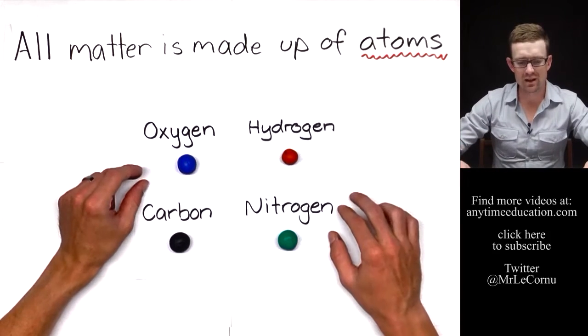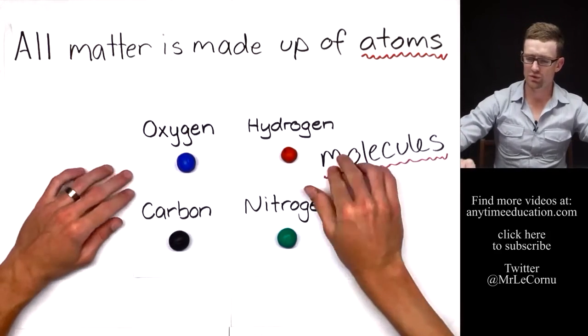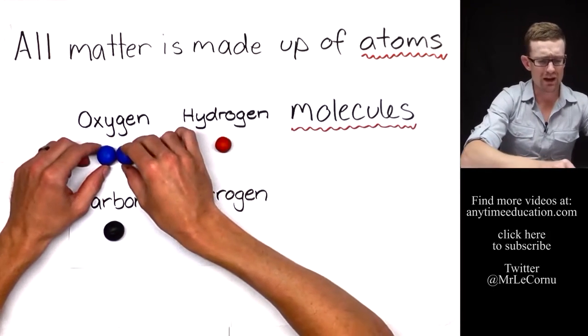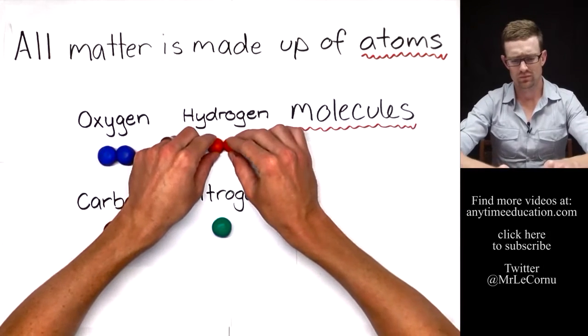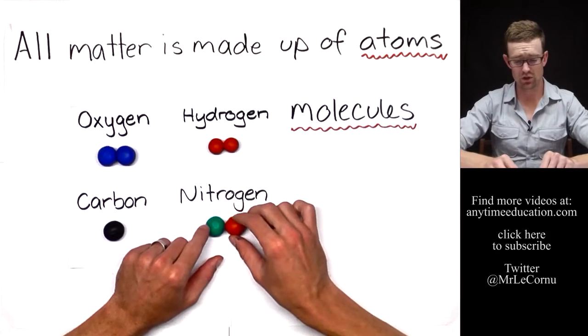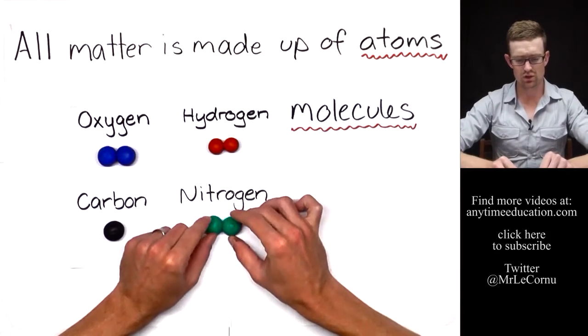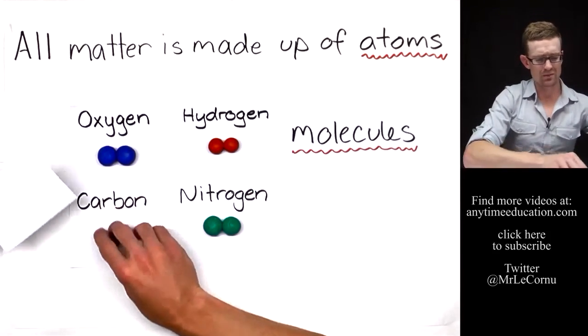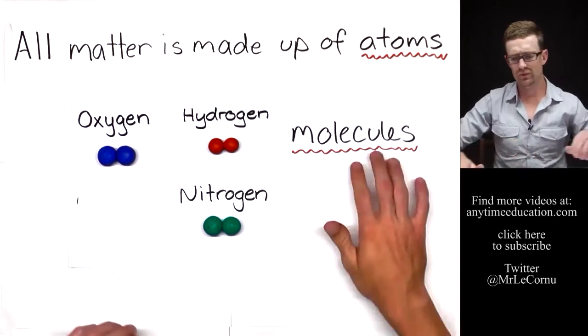Sometimes atoms form molecules, and molecules are when more than one atom are joined together. Here we're forming an oxygen molecule, a hydrogen molecule, and a nitrogen molecule. We call them molecules because we've got more than one atom that's joined together.